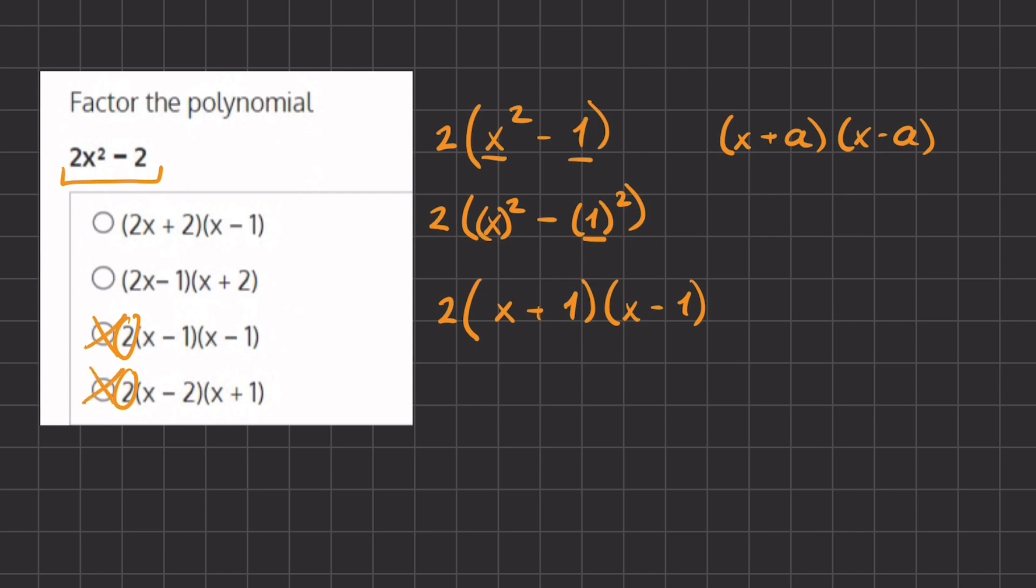Now let's take a look at options a and b, where the coefficient 2 was multiplied into one of the parentheses.